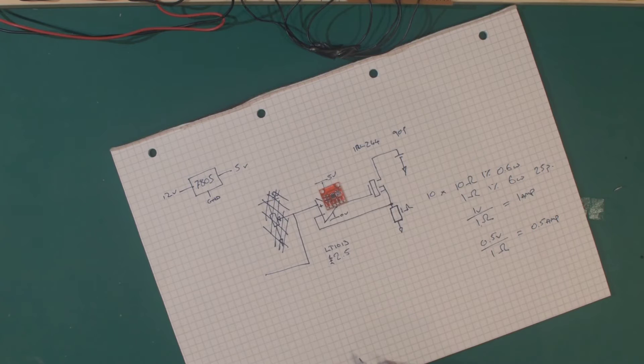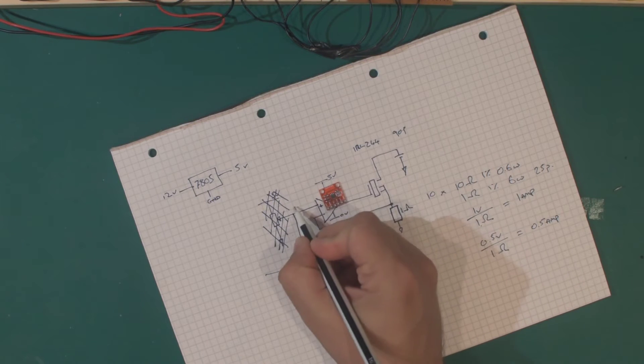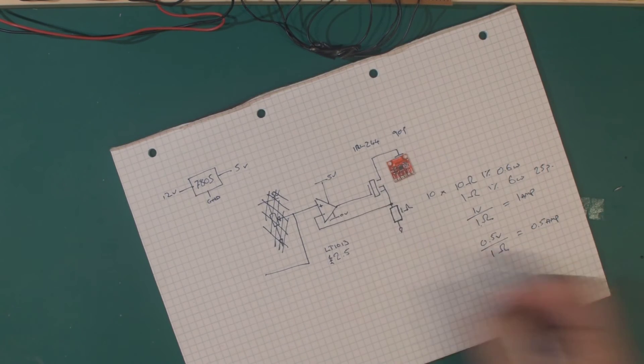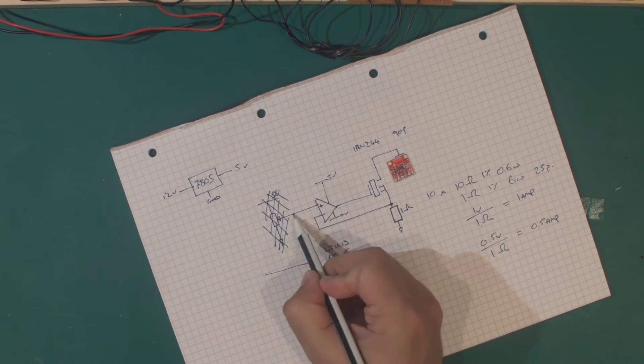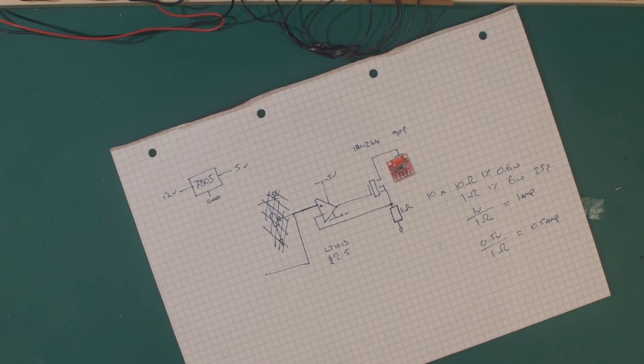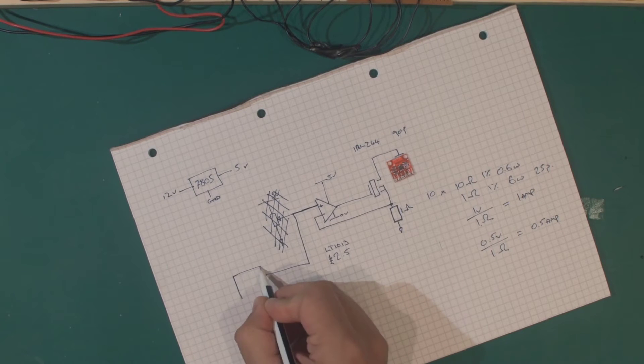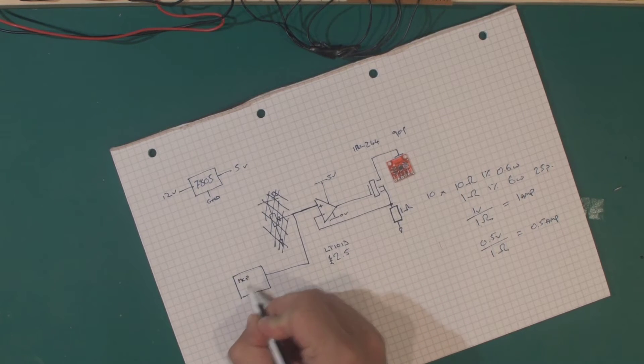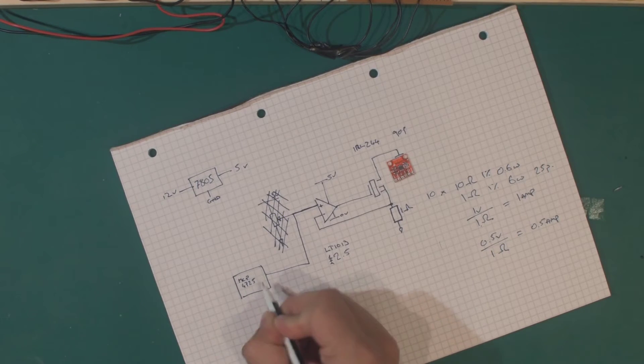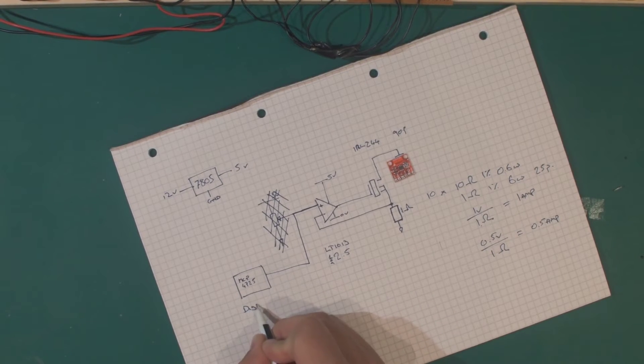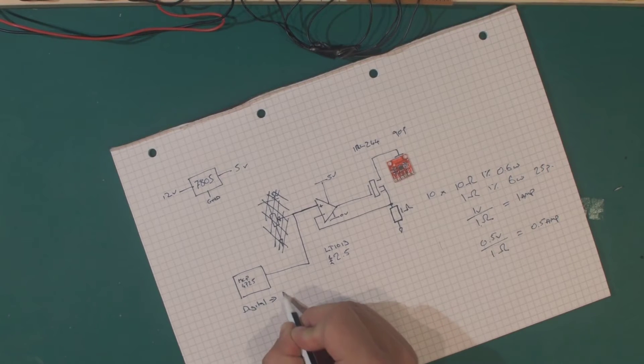These are the MCP4725 digital to analog converters because the Arduino doesn't have one and not even the Arduino Mega has one. So to generate the 1V or the varying voltages that we used last time on this input to the Op-Amp, first of all going to place the MCP4725 digital to analog converter.